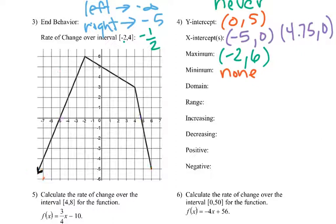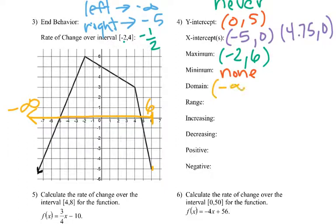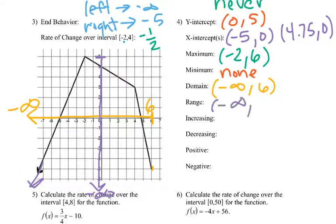Now domain and range. The x-values — if I start here at 6, and when I go left I'm going to keep going, so that's our end zone over here, negative infinity, to 6. So my domain is negative infinity to 6. My range — because that keeps going down, this goes down to negative infinity and then goes up to 6. So negative infinity to 6 again.